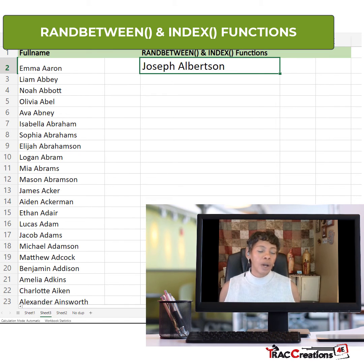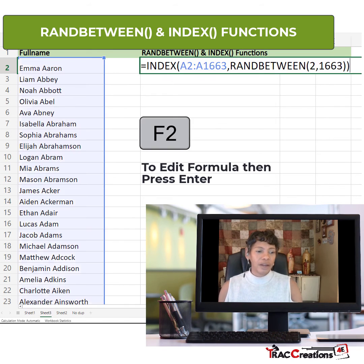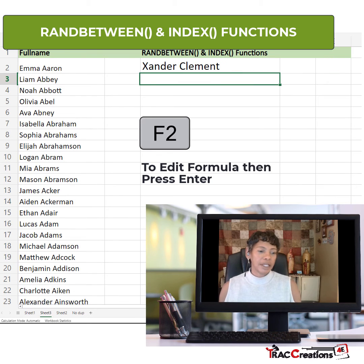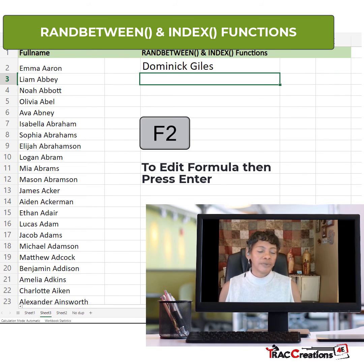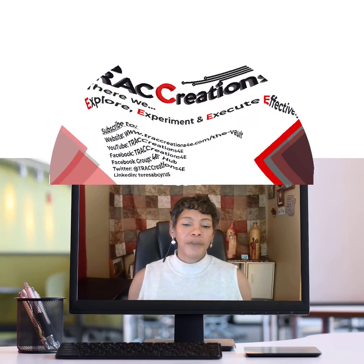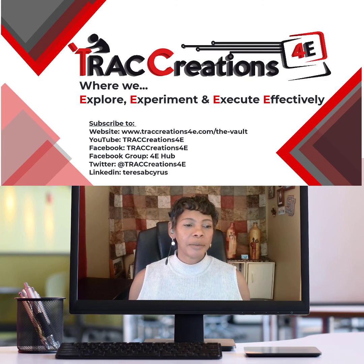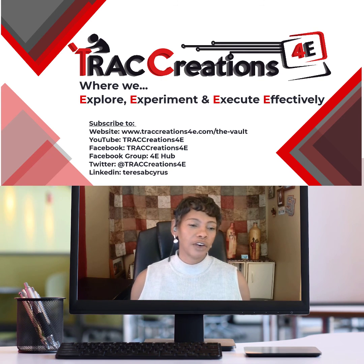If you have multiple winners that you need, just edit your formula and press Enter and you'll get another name. I'm pressing F2 to edit my formula, press Enter, and voila — you have your winners. If you like this video please give me a thumbs up. Follow me on all the social media platforms under trackcreation4e.com. Thank you.